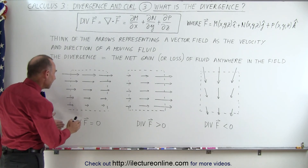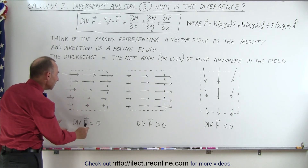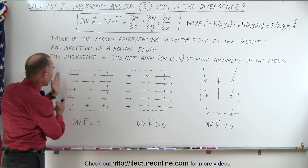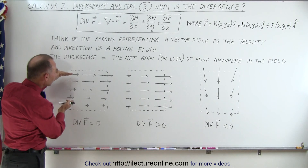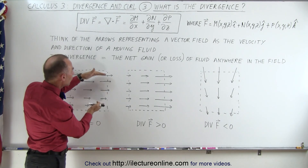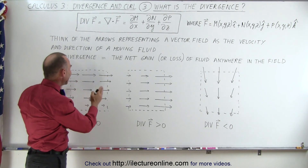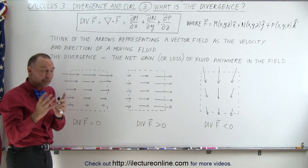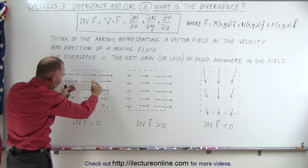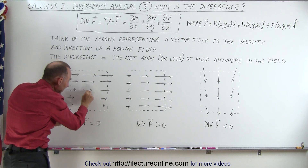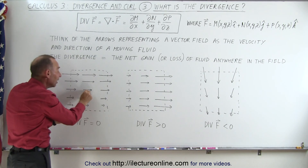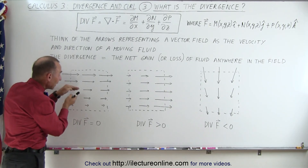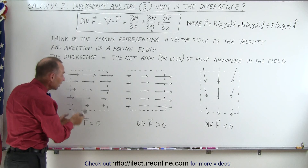If the magnitude and direction of the arrows going into the box equals the magnitude of the arrows coming out of the box — meaning the same amount of fluid goes in as comes out — then you can say that the divergence of the vector field is equal to zero. Typically, we shrink the box down to an infinitesimally small little box, and that should still hold true: if the amount of arrows going in equals the amount coming out, the divergence is zero.